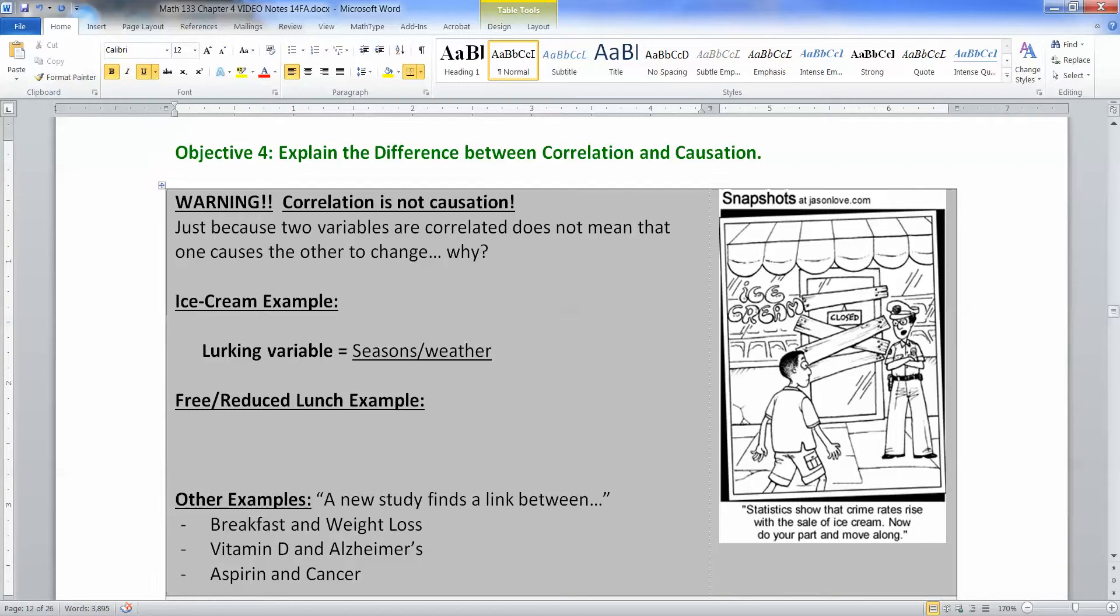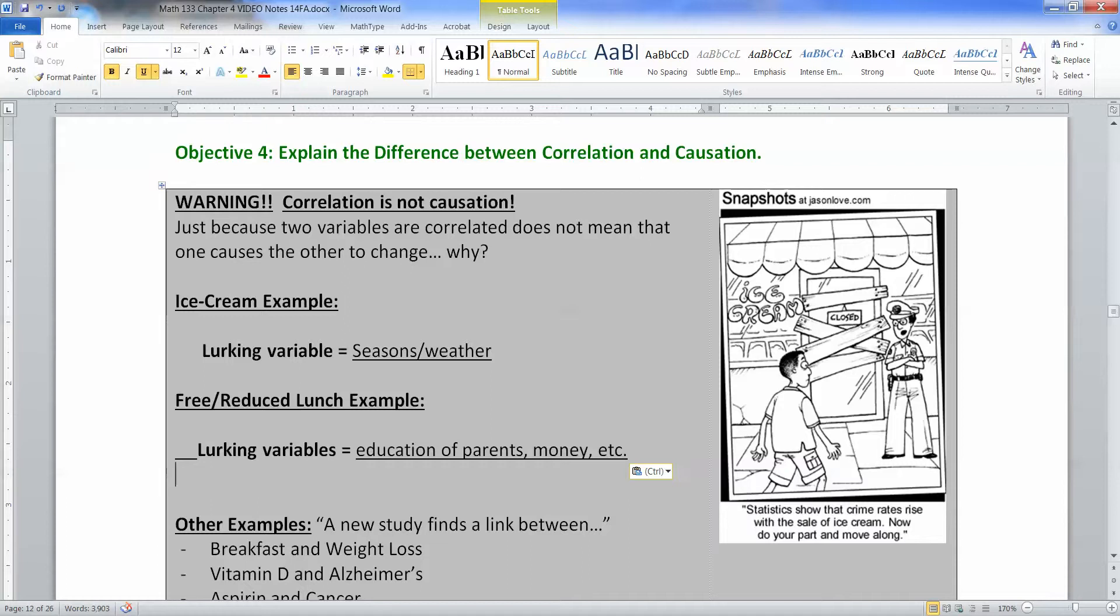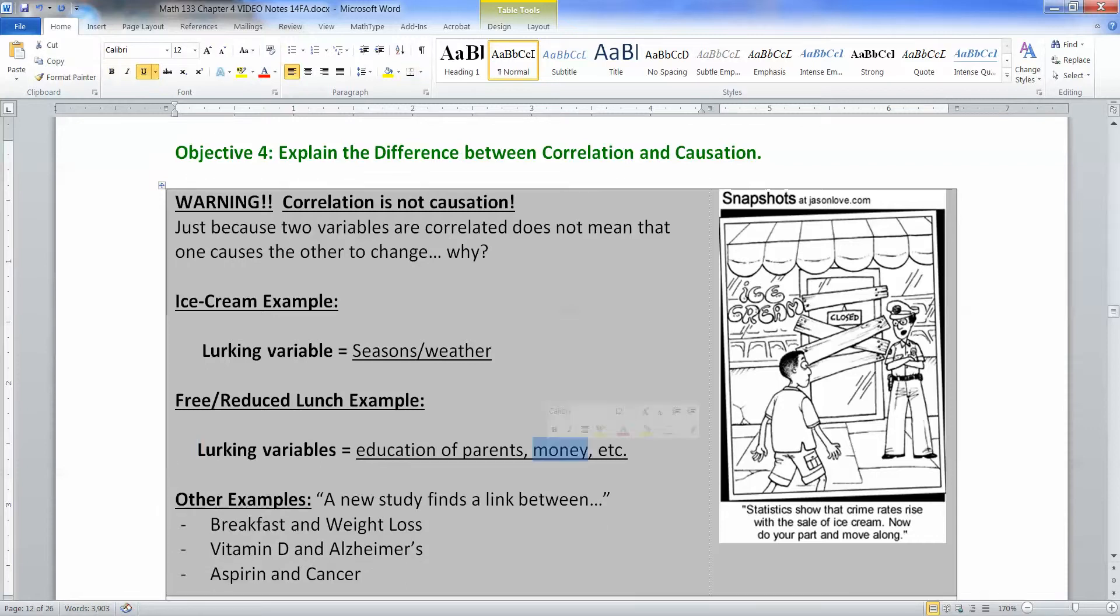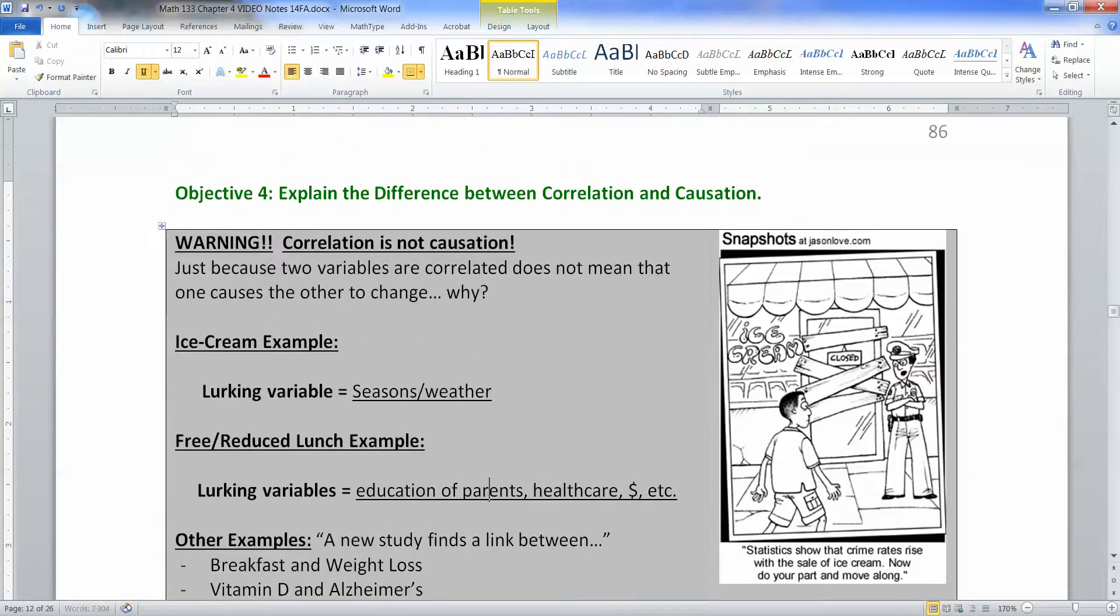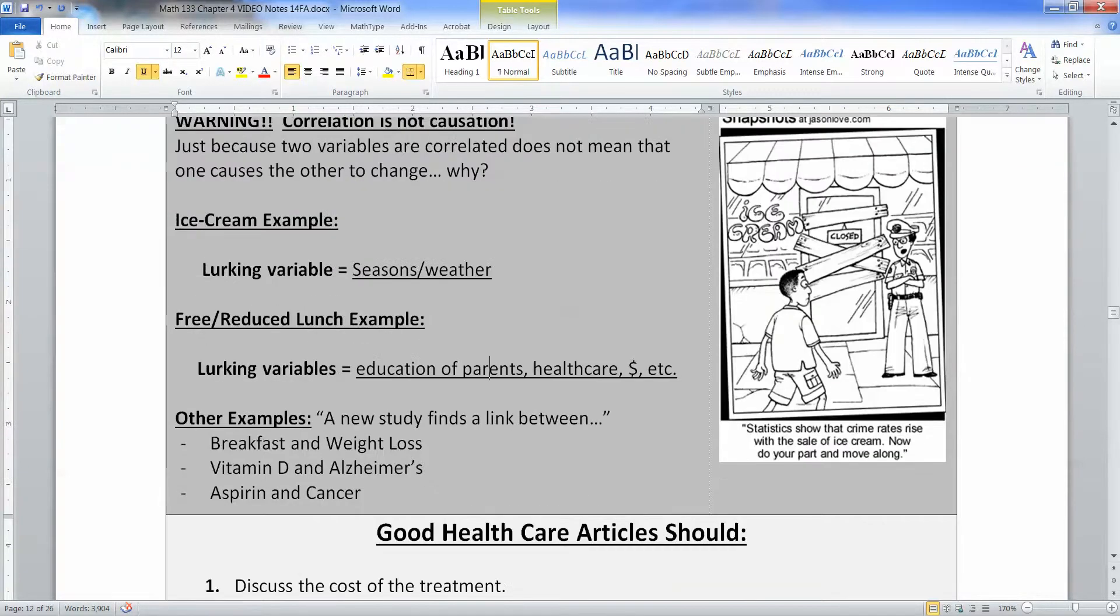Like the free reduced lunch example. There's a million of them. You could be having all sorts of things going on with those children - the education of the parents, the money of the parents, health care, etc. Now watch out for this whenever you hear things like 'a new study finds a link between aspirin and cancer' or 'vitamin D and Alzheimer's,' or coffee - does coffee cause things, is coffee not cause things? Eating breakfast - is that good for weight loss or not good for weight loss?